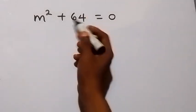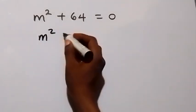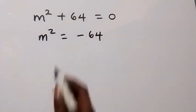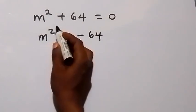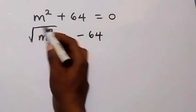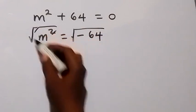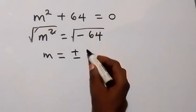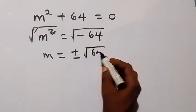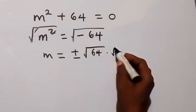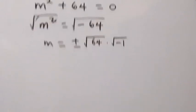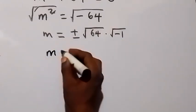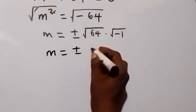From m² + 64 = 0, we take 64 to the other side: m² = -64. Taking the square root of both sides, m = ±√64 · √(-1) = ±8i, since √64 = 8 and √(-1) = i.